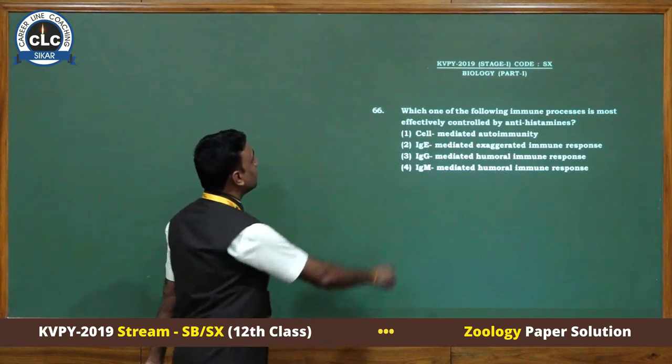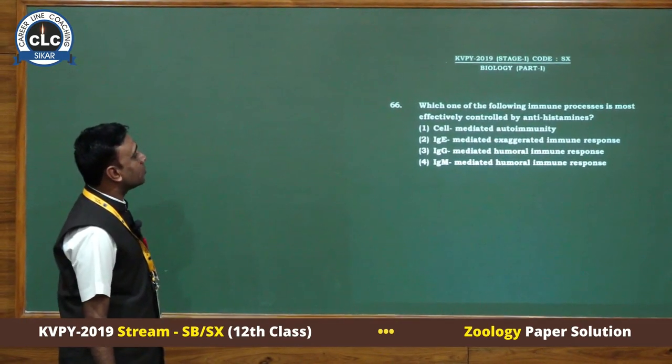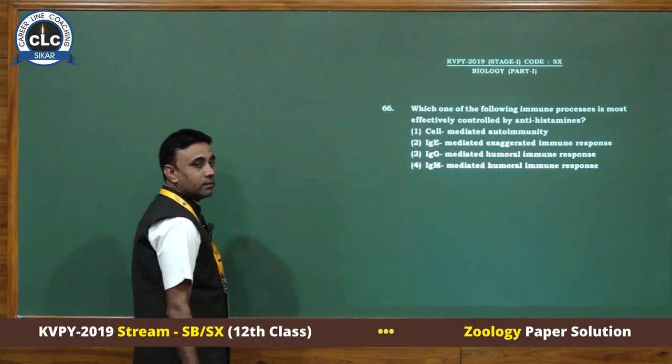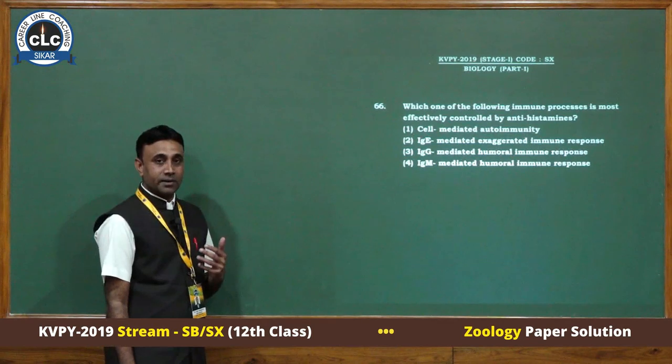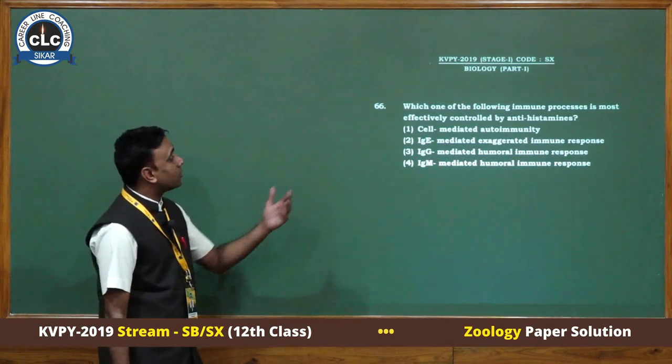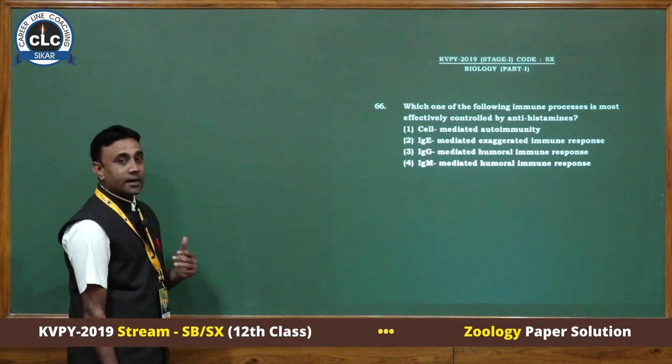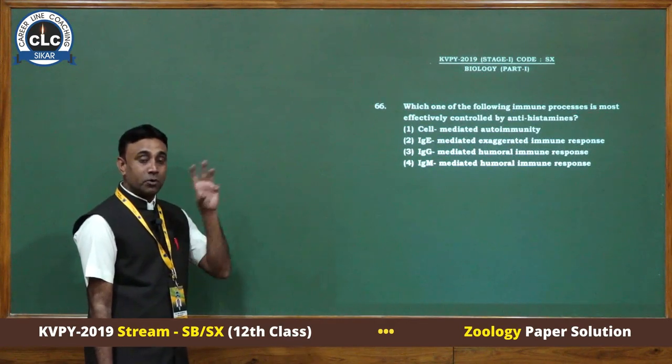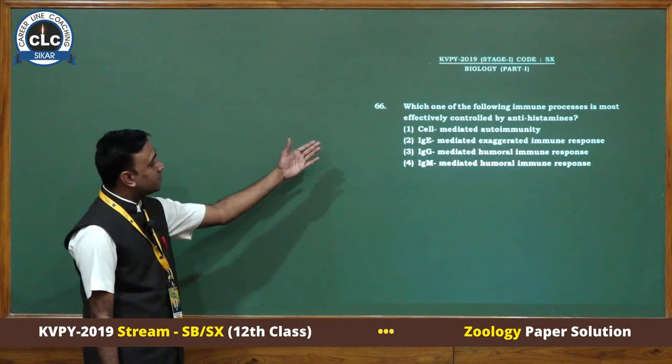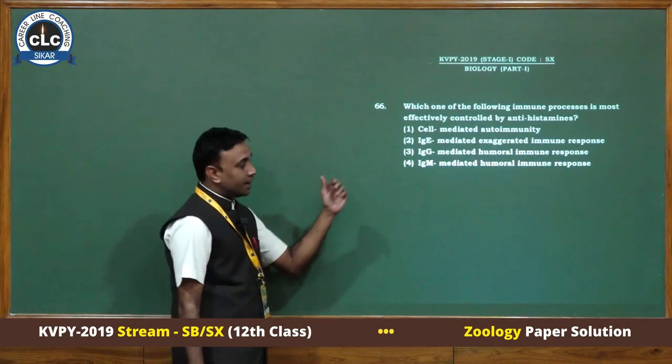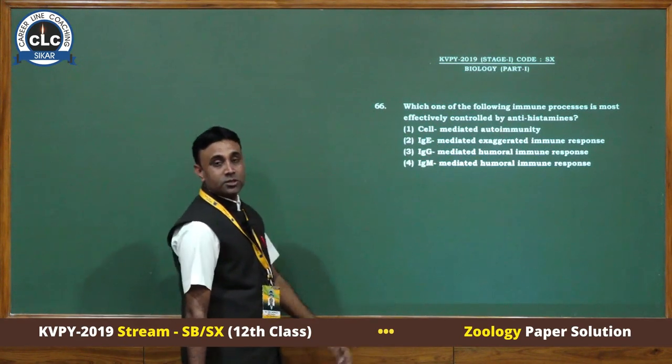The first question is which of the following immunoprocess is most effectively controlled by antihistamines? When some antigen enters our body, the body releases chemical substances called histamine from mast cells and basophils to protect from these poisonous substances. Our antibody system is activated, the immune system activity, and immunoglobulin E, which are most sensitive for allergic reactions, is released.